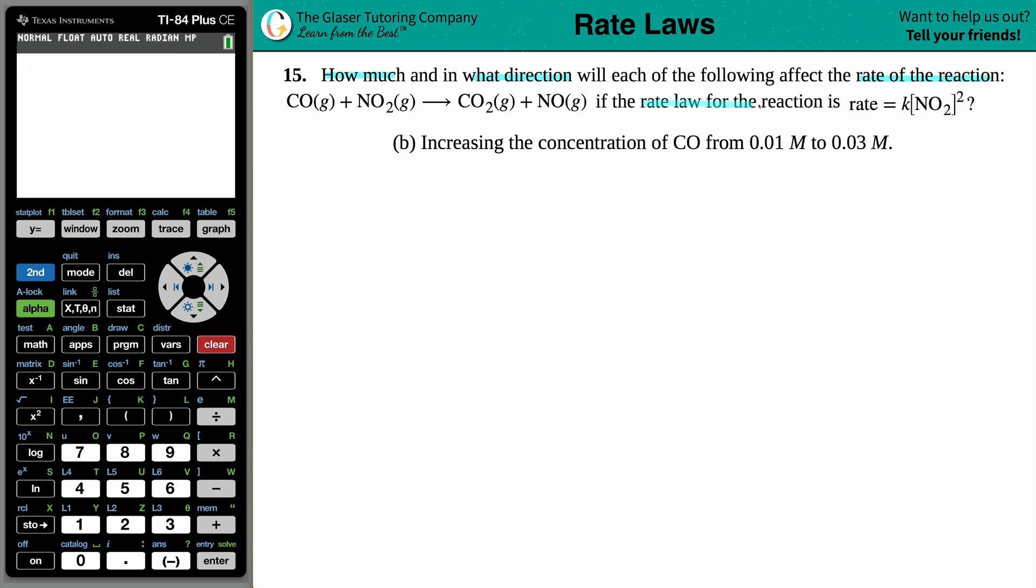The rate law for the reaction is rate equals k times the concentration of NO2 squared. As soon as they give me a rate law, that's probably the most important piece of information. So for this specific equation, the rate law is rate equals k, the rate constant, times the concentration of NO2 raised to the second.